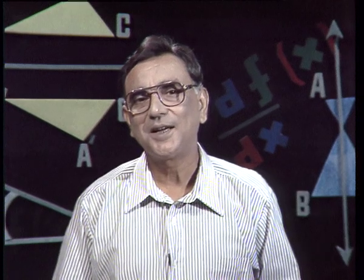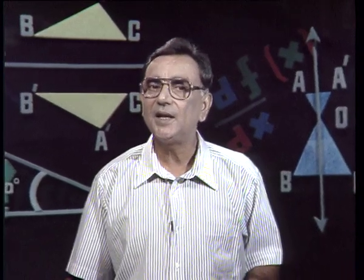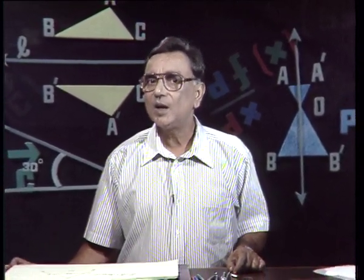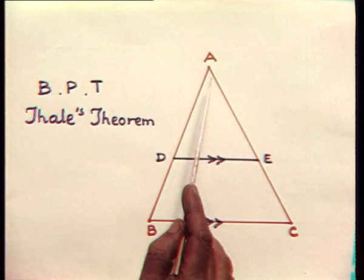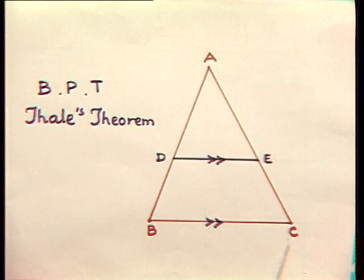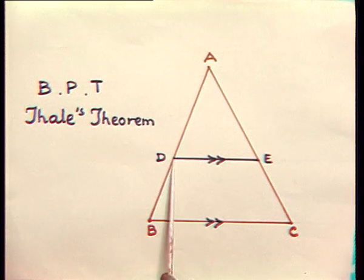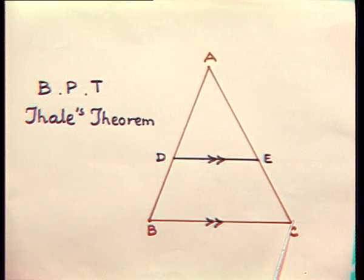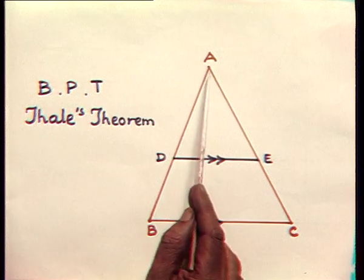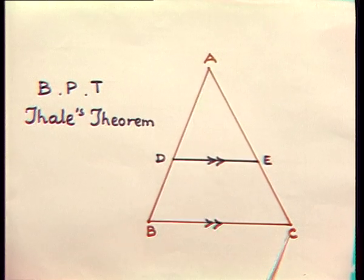Hello viewers, you must be familiar with what the basic proportionality theorem is. Let us quickly recall what the basic proportionality theorem is. The basic proportionality theorem was given to us by a Greek mathematician named Thales. According to Thales' theorem, if ABC is a triangle and we draw a line DE parallel to BC, then it will divide the sides AB and AC proportionally. What does that mean? Let us see that.